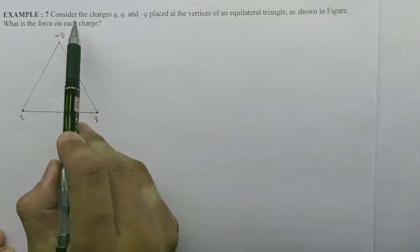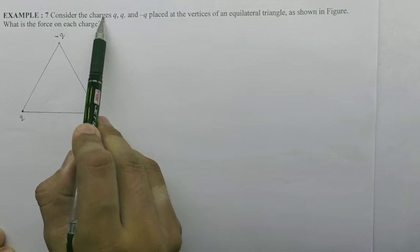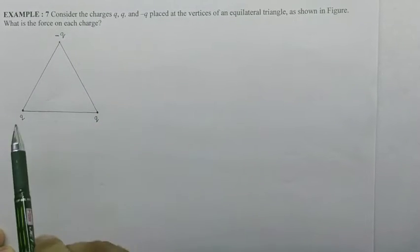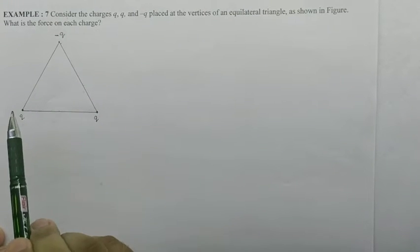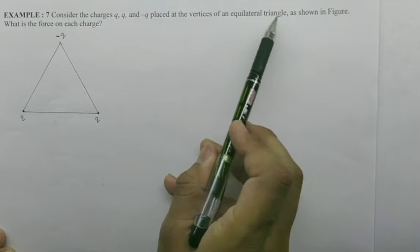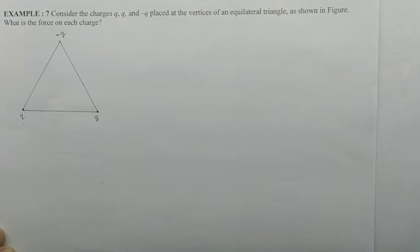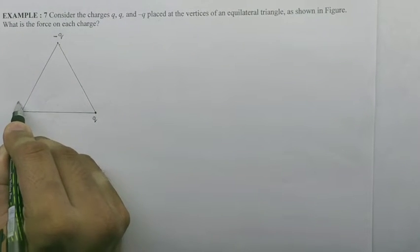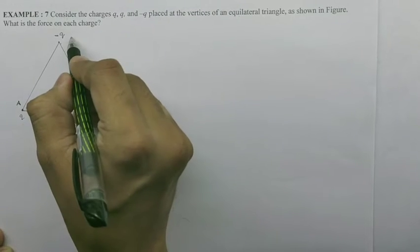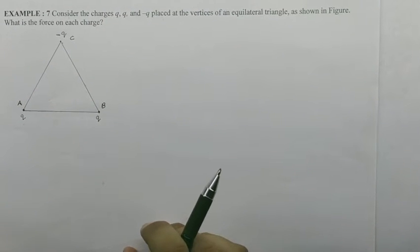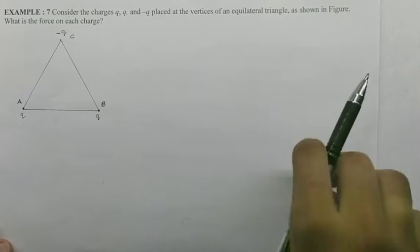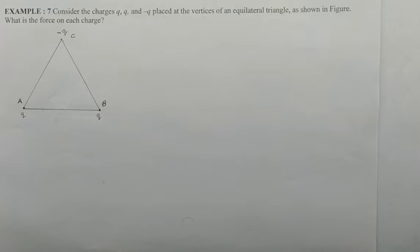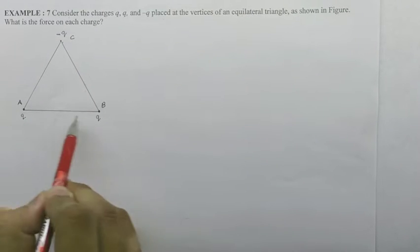Example 7: Consider the charges q, q, and minus q placed at the vertices of an equilateral triangle as shown in figure. What is the force on each charge? So you have point A, B, and C. Let's talk about A. The force between A and B is repulsive because both are positive charges.